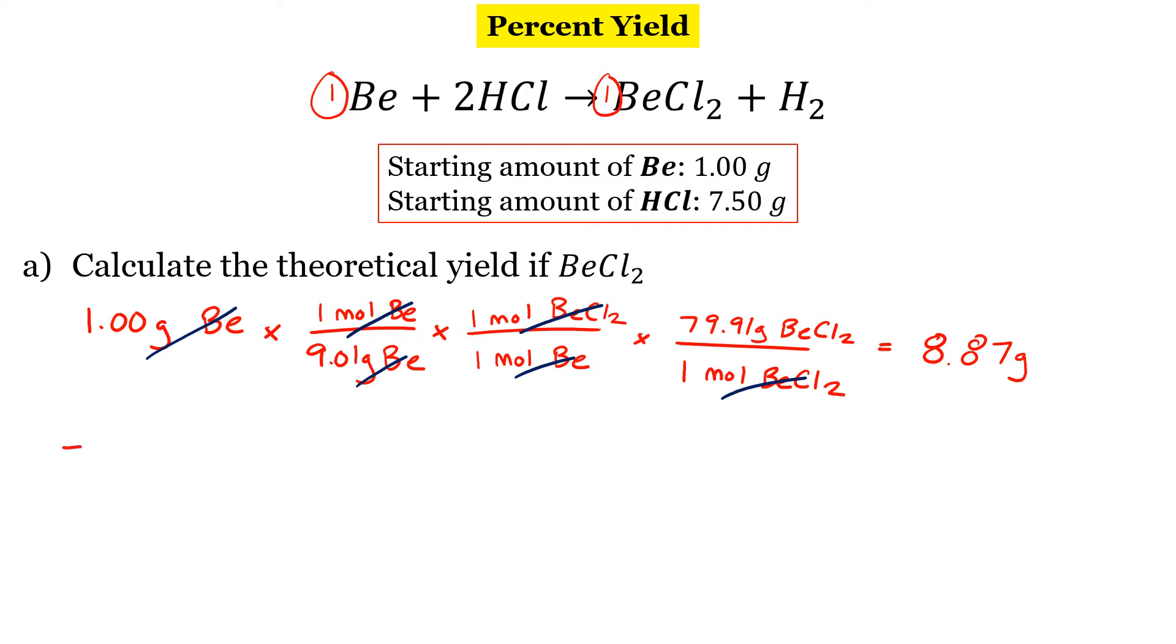So let's do the same thing with our HCl. I have 7.50 grams. And HCl's molar mass is 36.46. HCl has a different ratio here. There are 2 moles of HCl for every 1 mole of product. And to convert our product back into grams, we're going to be using the same molar mass here, 79.91.